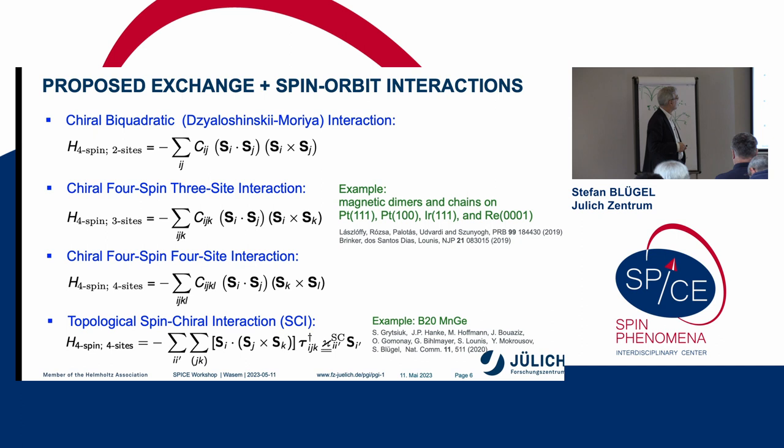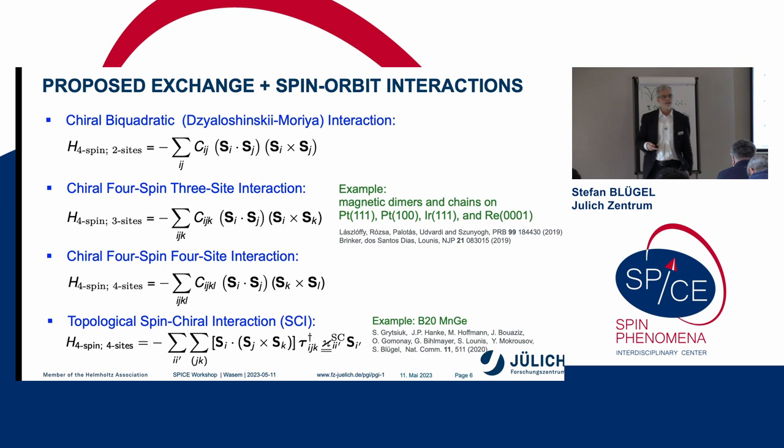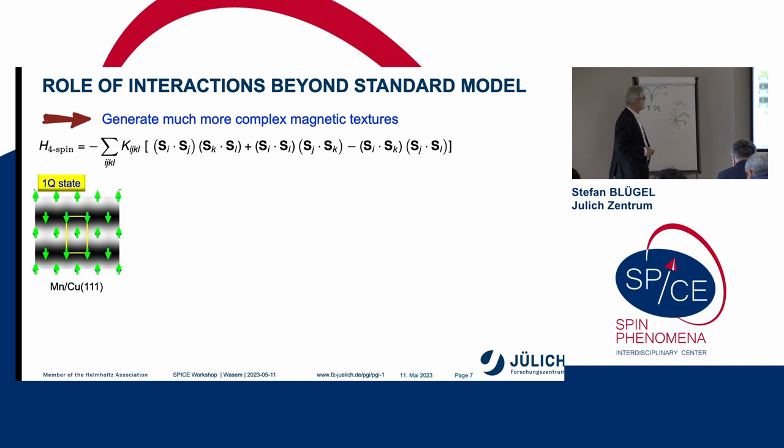So basically, if you look at the literature in the last years, you have the bi-quadratic exchange, the four-spin-three-site interaction, the four-spin-four-site interaction, the ring exchange. You have the topological chiral-chiral interaction. These are all exchange interactions which have popped up in the last years. And you have a similar scenario with spin orbit interaction. For example, the chiral bi-quadratic interaction, the chiral four-spin-three-site interaction, the topological spin-chiral interaction.